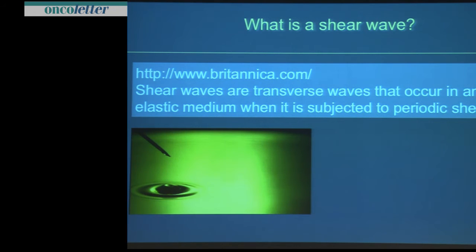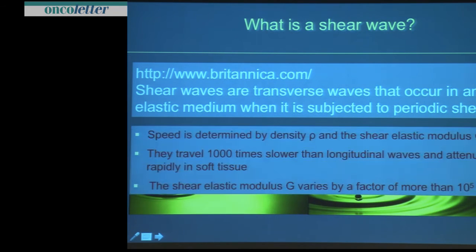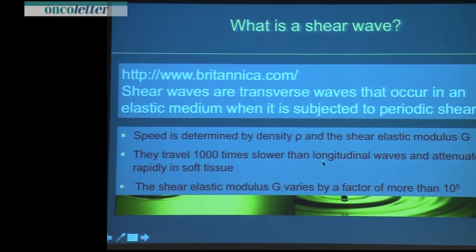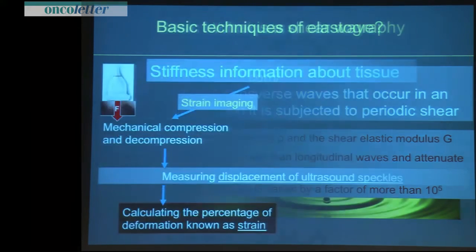But you should know the difference between a shear wave and a normal wave. A shear wave is a transverse wave that occurs in an elastic medium when it is subjected to periodic shear — like a wave radiating to the periphery. The most important point is it is much slower than the regular ultrasound wave, and it attenuates very rapidly in soft tissue.